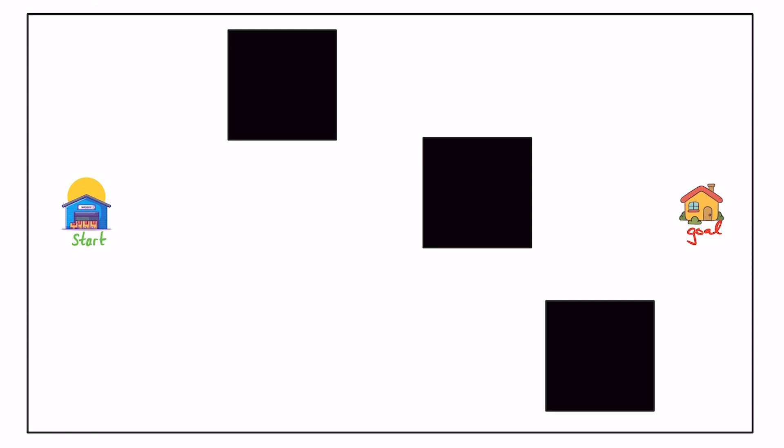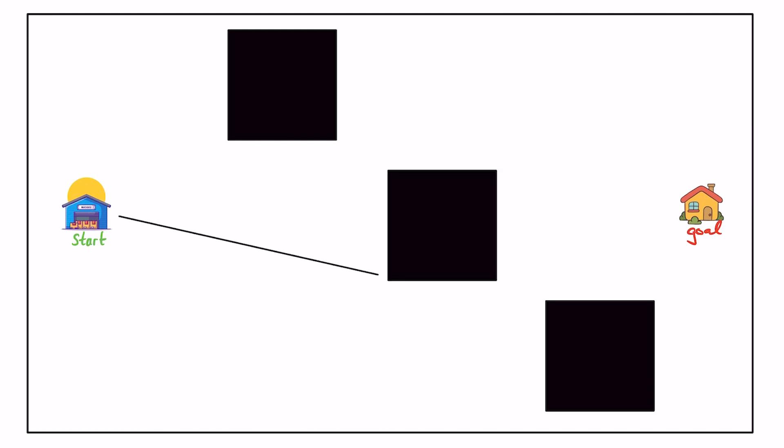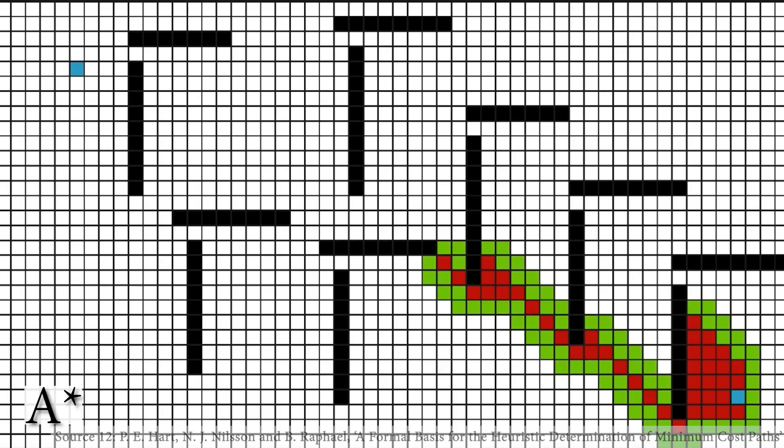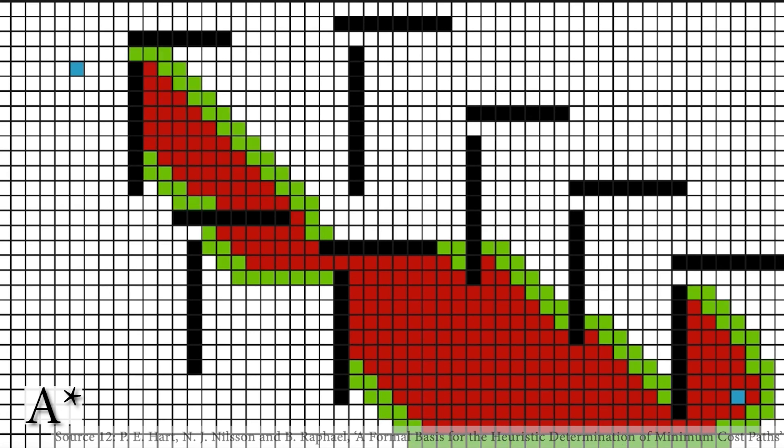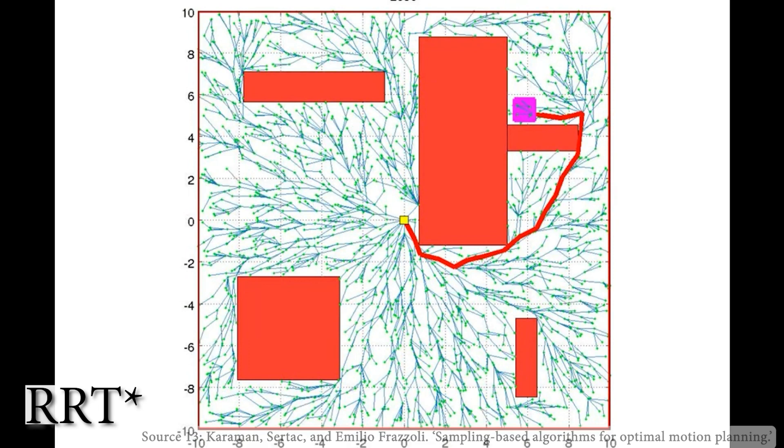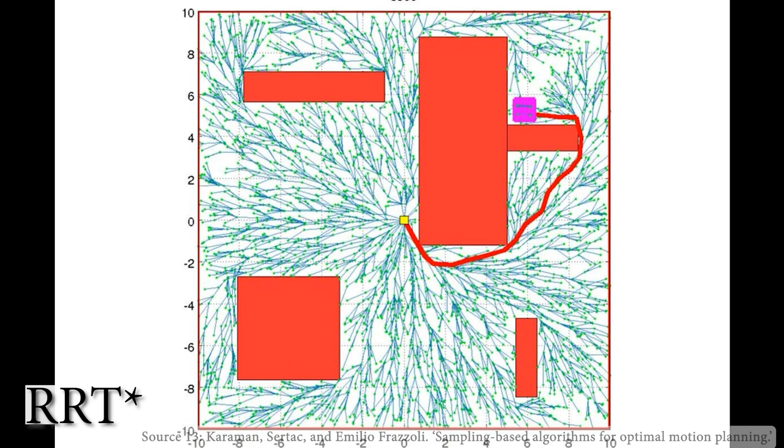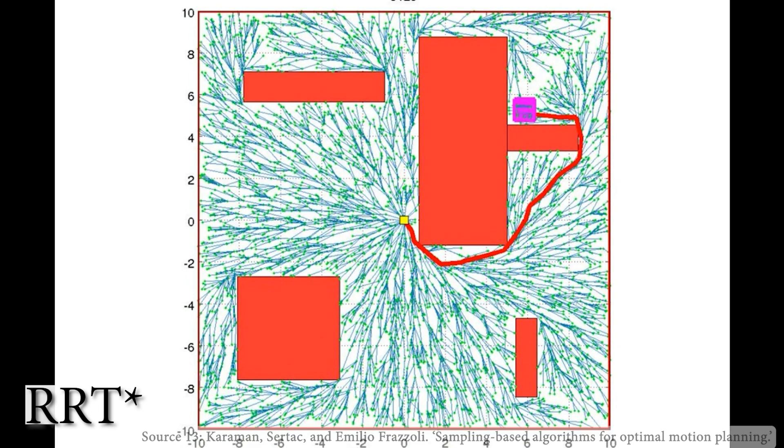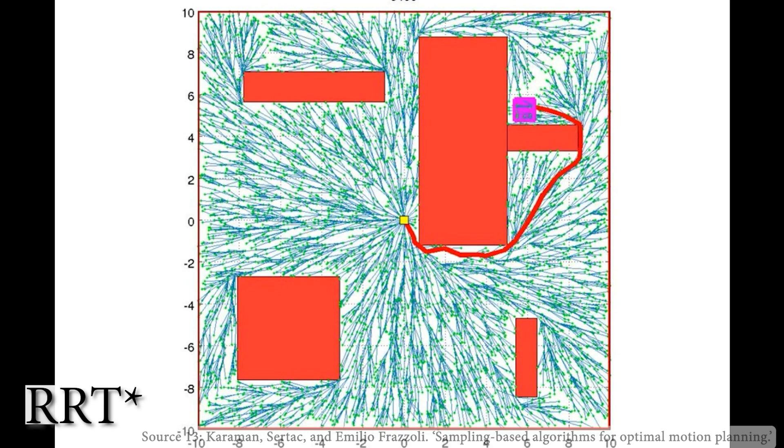How can we path plan this vehicle to get from the start point to the goal point in the most efficient way, or in this case, the path that uses the least total distance? To solve this, there are a number of existing algorithms, such as Dijkstra's A-star or RRT-star, each of which have their own pros and cons depending on the application. In this case, I've chosen to use RRT-star.